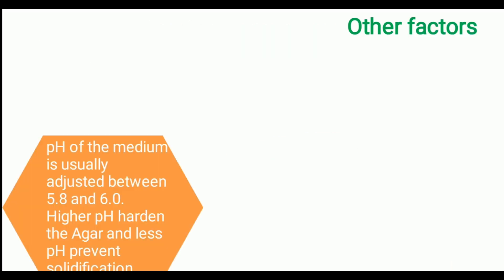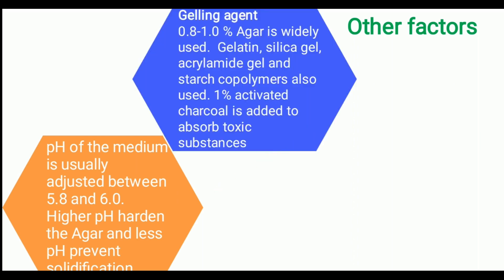Some other factors: the pH of the medium plays a key role in plant development and nutrient uptake. Generally plants grow well in pH 5.8 to 6 under in vitro conditions. Higher pH hardens agar, while lower pH prevents the solidification of agar in semi-solid nutrient medium. For the gelling agent, usually 0.8 to 1% agar is widely used. Alternatives include gelatin, silica gel, acrylamide gel, and starch copolymers.